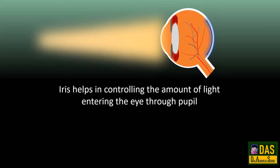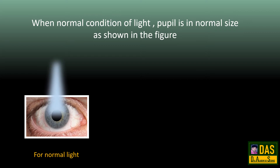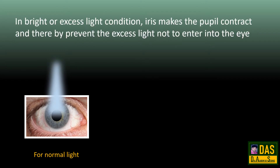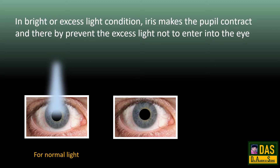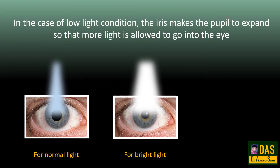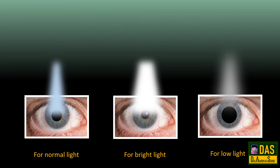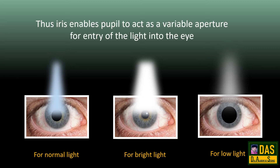The iris helps in controlling the amount of light entering the eye through the pupil. In normal light conditions, the pupil is in normal size. In bright or excess light, the iris makes the pupil contract, thereby preventing excess light from entering the eye. In low light conditions, the iris makes the pupil expand so that more light is allowed in. Thus, the iris enables the pupil to act as a variable aperture for the entry of light into the eye.